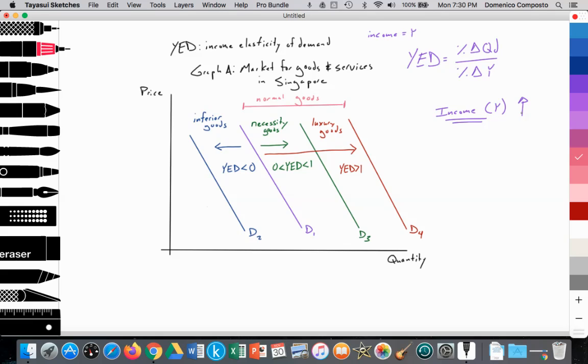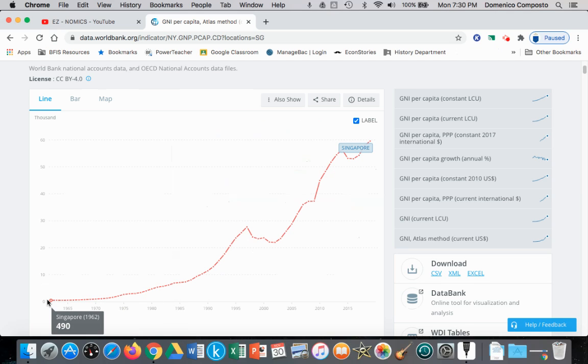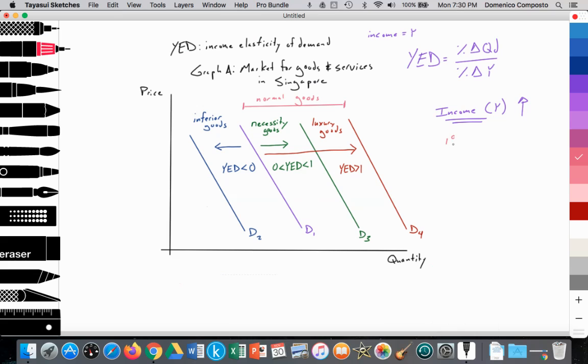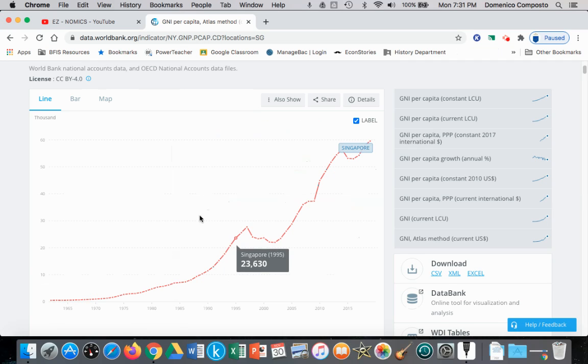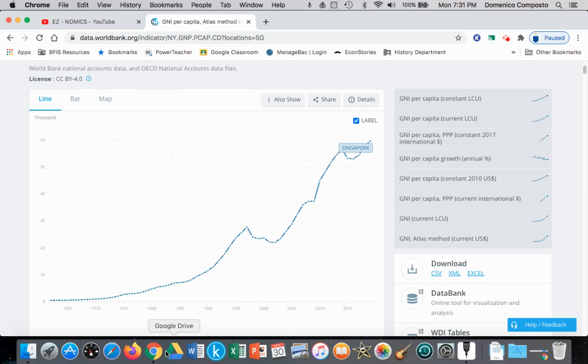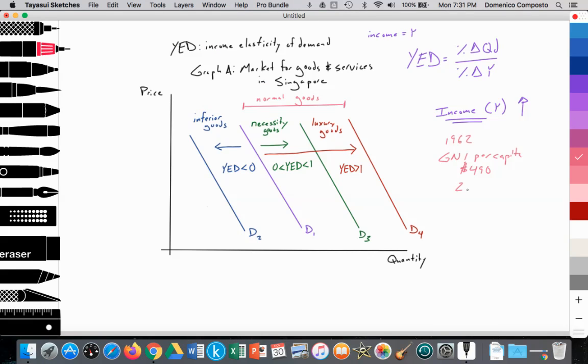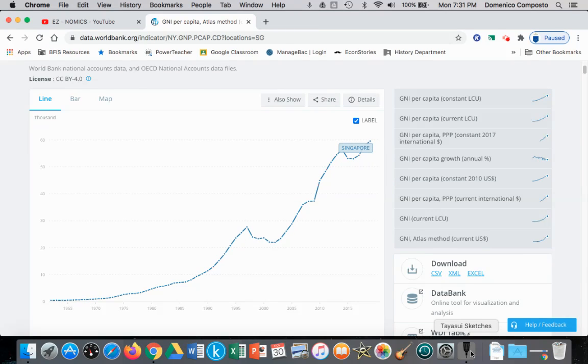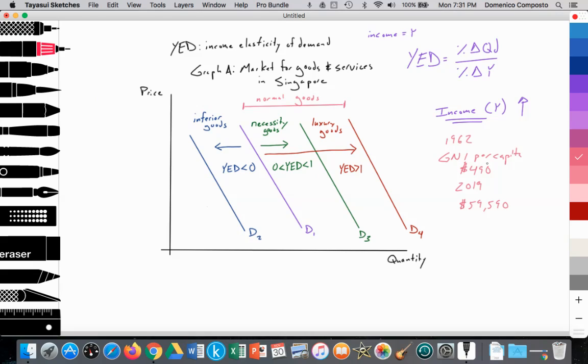Perhaps we can use some real data to support that. In 1962, GNI per capita income, gross national income per capita, per capita income was rising from $490. And then it goes up to $59,590 in 2019. So this is what we're assuming, that income is rising. It's going from $490 to $59,590. So what is happening to demand for goods and services in Singapore?